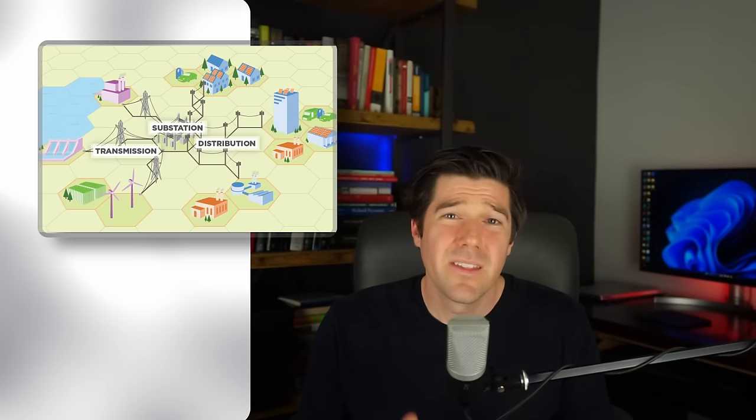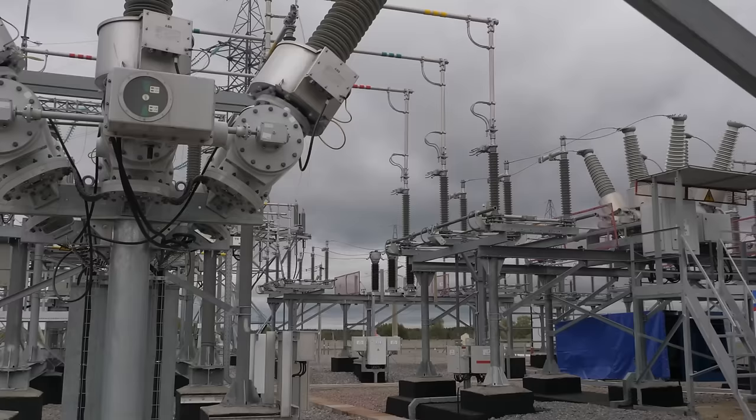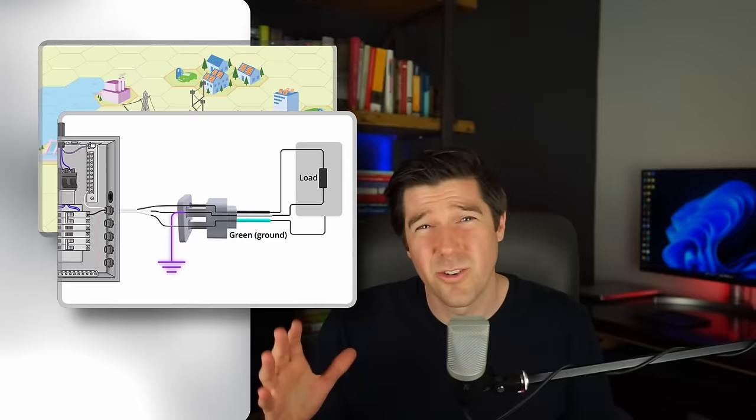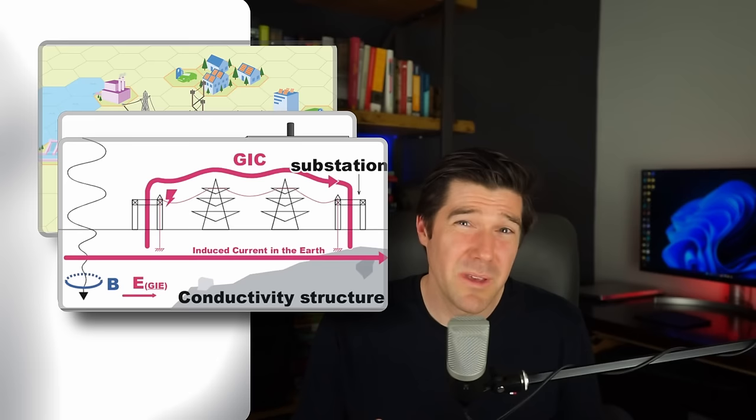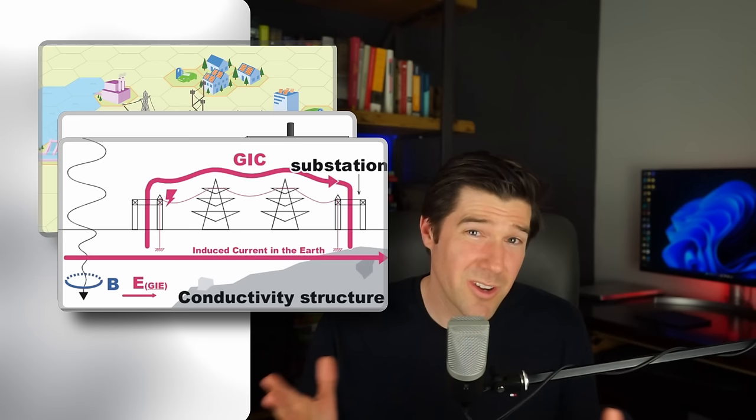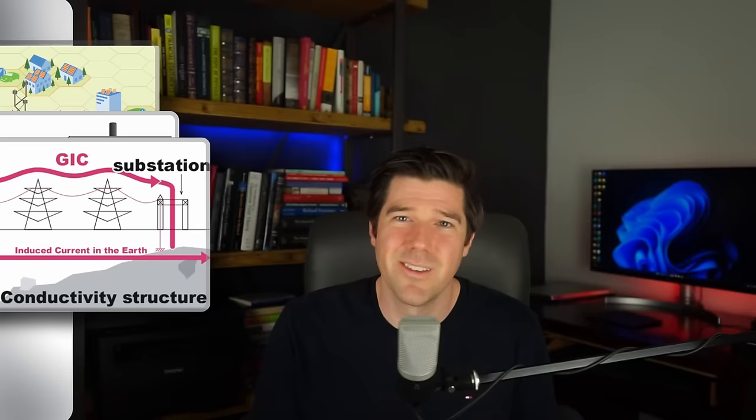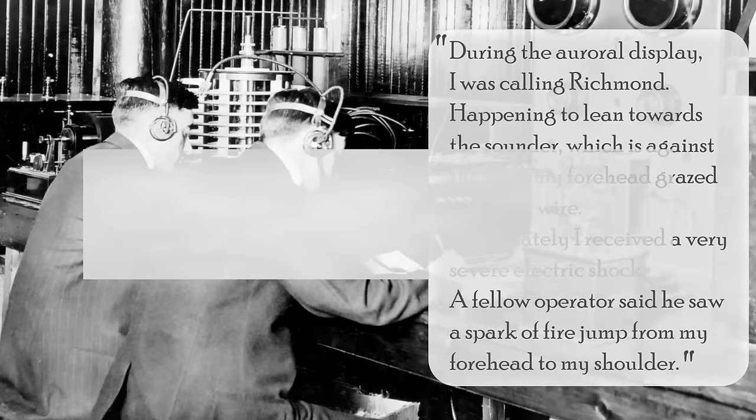The aspect of the power grid that becomes especially vulnerable in this scenario is the ground wire. Virtually every aspect of the power grid, from power substations to transmission lines, are grounded to Earth. Earth ground normally acts as a safety mechanism for when transmission lines become overloaded with current. However, during a CME, these wires become pickup wires for geomagnetically induced currents, and the high currents can destroy all ground-based electrical equipment connected to them. If you remember the telegraph operator's account during the Carrington event, he cited getting shocked by the ground wire, which grazed his face.